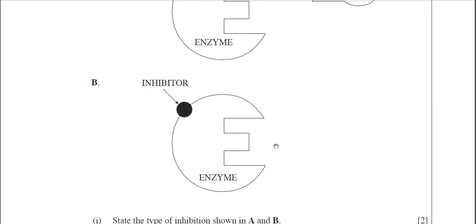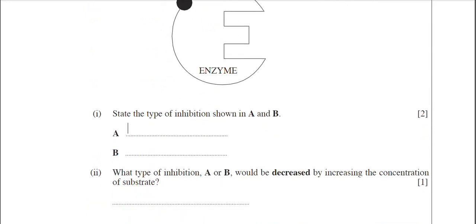If we scroll down to part B, the inhibitor in this case is drawn as a circle, which is obviously a very different shape to that of the active site. The inhibitor is actually bound to the enzyme at a site that's not the active site. So that type of inhibitor would be a non-competitive inhibitor. So the answers are: A is a competitive inhibitor and B is a non-competitive inhibitor.